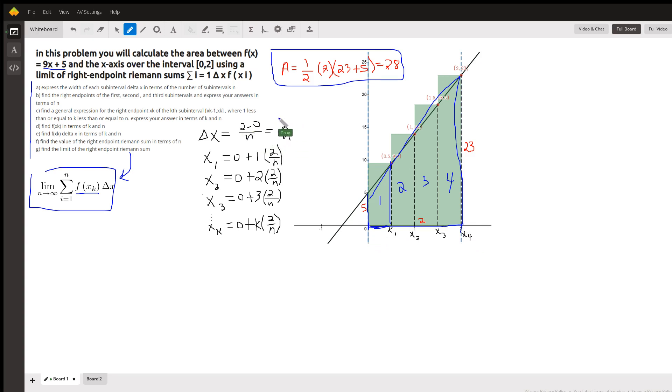So there's an expression for delta x. Now to get x sub k, you can notice that x sub 1, the first right hand endpoint, if we start at 0 and add on one of these widths, that'll be the x coordinate of x sub 1. And to get x sub 2, we start at 0 and add on two of these widths, and three of these widths for x sub 3. So here is a formula for the kth width: 2k over n is what this simplifies to.